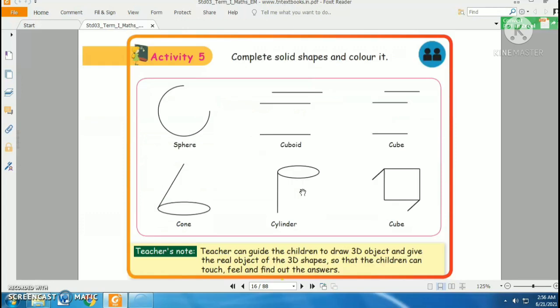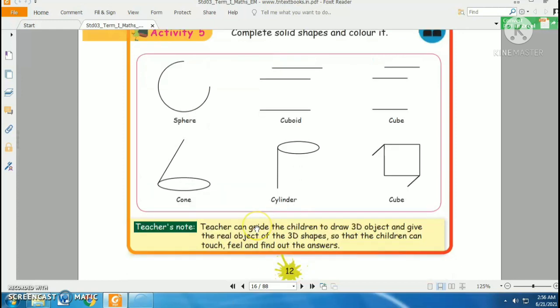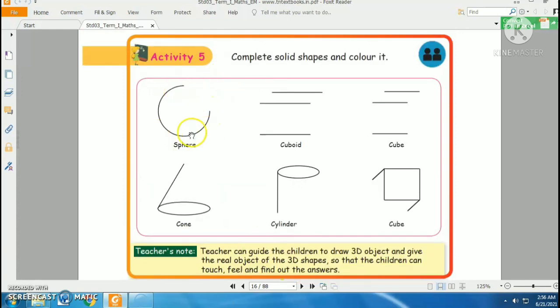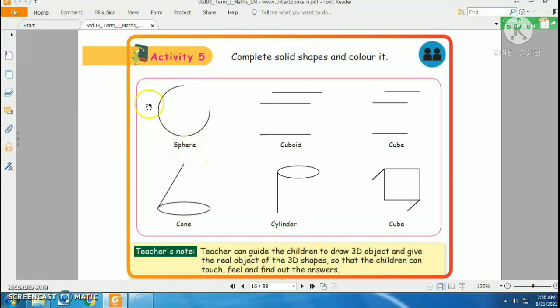This is page number 12, and here you can see some incomplete shapes. Can you guess what this shape is? Yes, this shape is a sphere, but it is incomplete. You can complete it using a pencil.